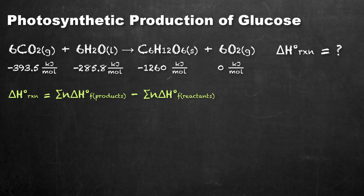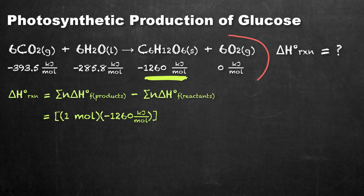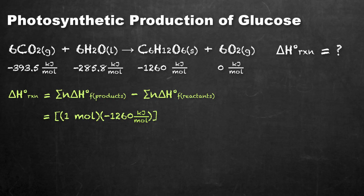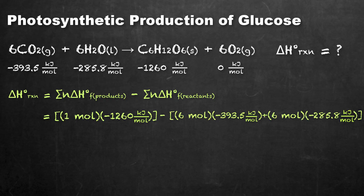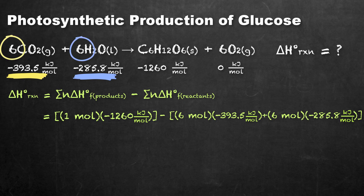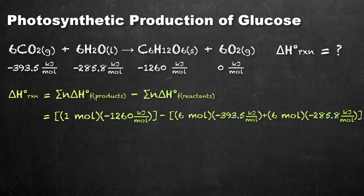We can see that we have one mole of glucose with a heat of formation of negative 1260 kJ/mol. We multiply this by one mole. Oxygen does not contribute to our overall enthalpy change calculation because it is already in its standard state. We then subtract: six moles times the heat of formation of carbon dioxide, which is negative 393.5 kJ/mol, plus six moles times the heat of formation of liquid water, which is negative 285.8 kJ/mol. Plugging these into our overall equation gives an overall enthalpy change of positive 2816 kilojoules.